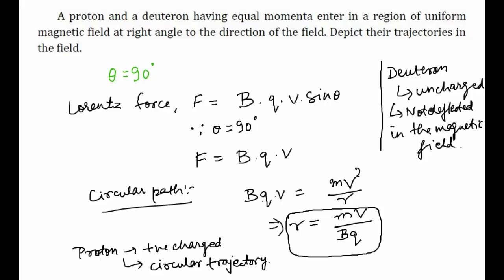So these are the required trajectories: the proton follows a circular trajectory, and the deuteron is not deflected in the magnetic field.